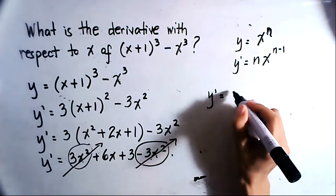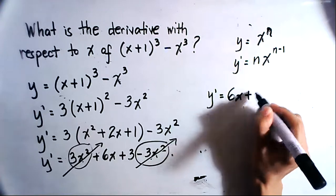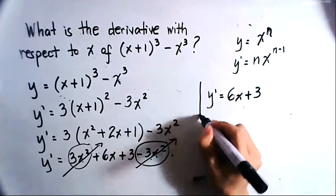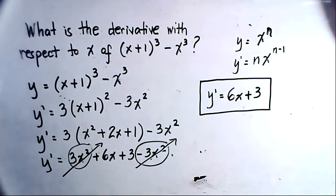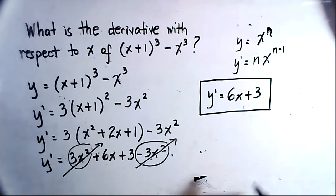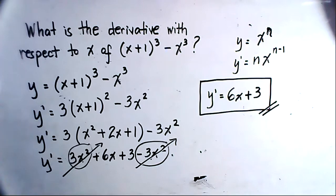And that would give us a value of 6x + 3. So our answer to the question, what is the derivative with respect to x of (x+1)³ - x³ will be 6x + 3. So this is the first derivative of that particular equation or function.